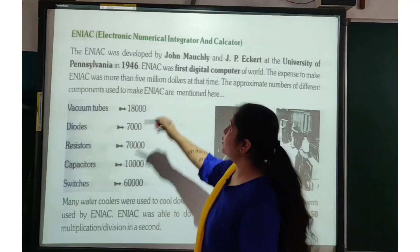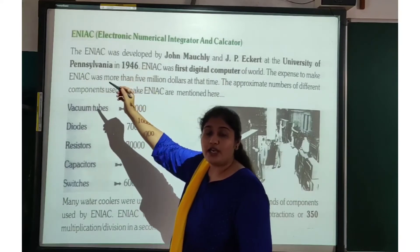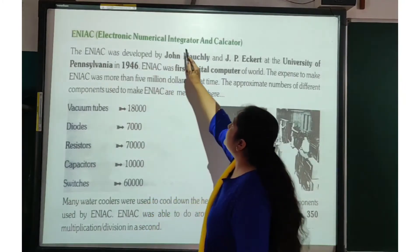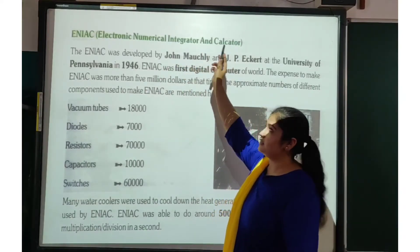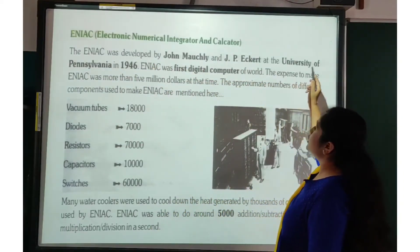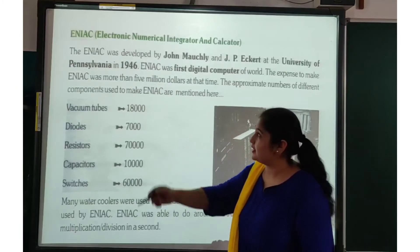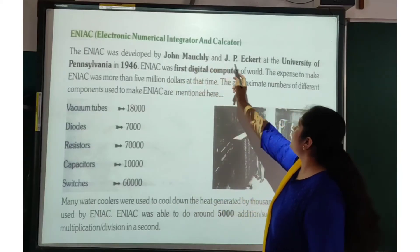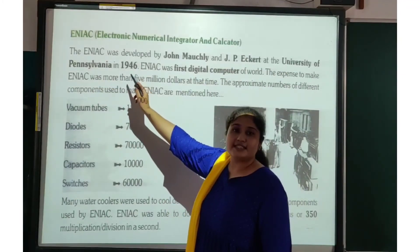On page number 7, we are continuing with the topic ENIAC. What is the full form of ENIAC? Electronic Numerical Integrator and Calculator. The ENIAC was developed by John Moshley and J.P. Eckert at the University of Pennsylvania in 1946.